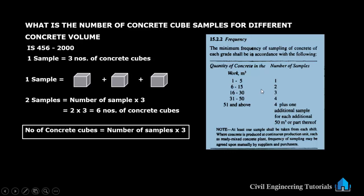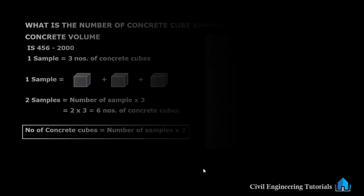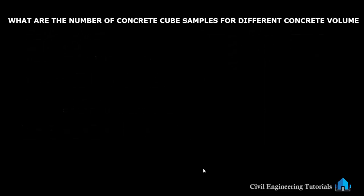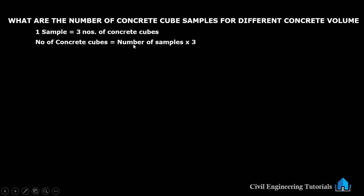As per IS 456-2000, the frequency of concrete cube samples for different concrete volumes is given in this chart. I will show it in a table format. I have also prepared a chart for easy understanding. One sample equals three numbers of concrete cubes, and the number of concrete cubes equals number of samples multiplied by three.